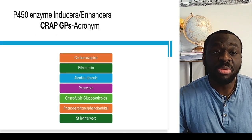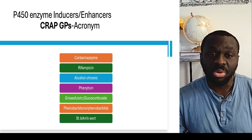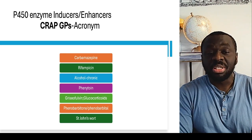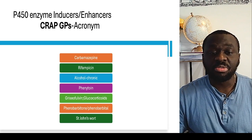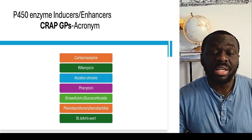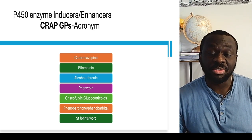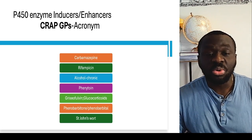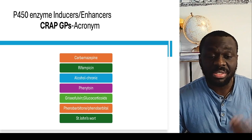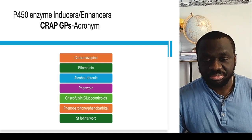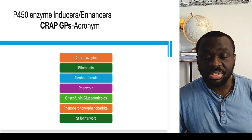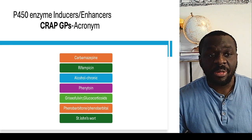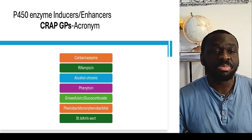There's an acronym for the P450 enzyme inducers: CRAPGP. It stands for Carbamazepine, Rifampicin, Alcohol — specifically chronic alcoholism enhances or induces P450 enzymes, whereas binge drinking or acute alcohol intake actually suppresses it. Then Phenytoin, Griseofulvin, Glucocorticoids like dexamethasone and prednisolone also enhance the P450 enzymes. Phenobarbitone — also called phenobarbital — increases or enhances P450 enzymes. And St. John's Wort, which has some antidepressant effects, also enhances or induces or increases the P450 enzyme activity.